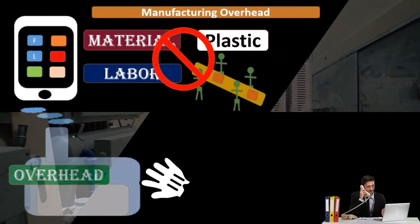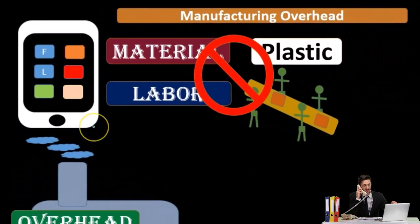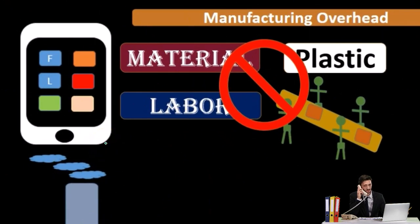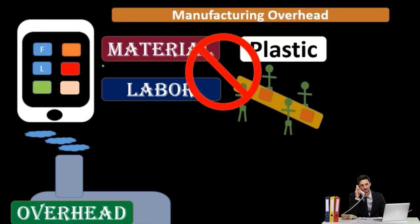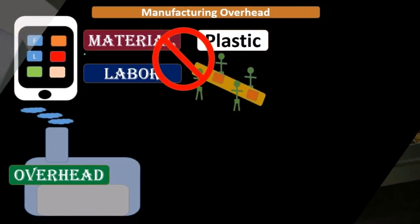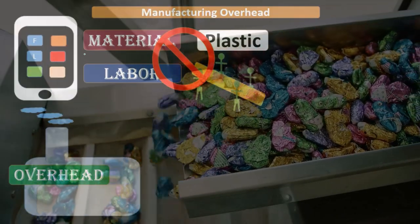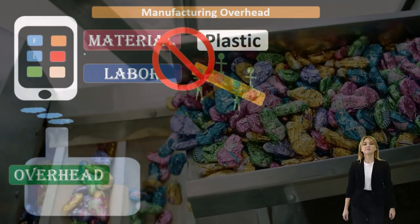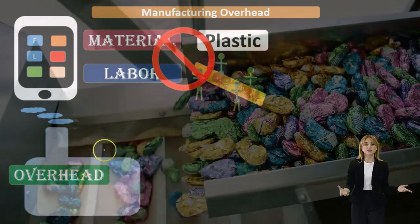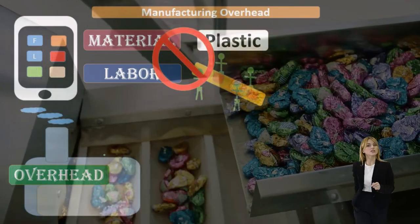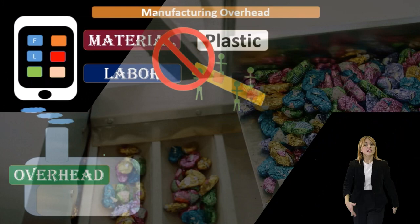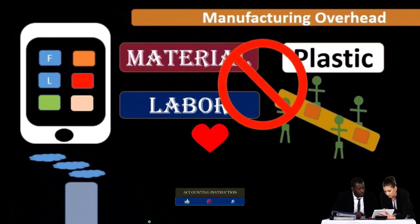Why is that necessary? Because we want to determine the cost per tablet. We can do that by applying direct material and direct labor costs directly to that particular item — that particular inventory, job, or process — whatever method we are using to track inventory. But everything else goes into overhead. It's the bucket for everything else. That's why the definition defines it by what it's not: not direct materials, not direct labor. It's everything else.